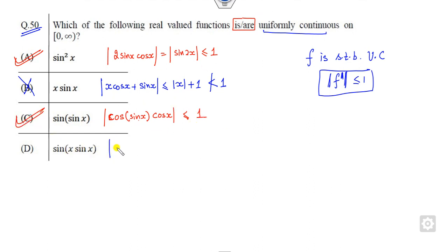Look for the last option. The derivative of this is cos x sin x times (x cos x plus sin x). Now, what is the mod of this? This value must be less than 1, but this value is less than x plus 1, which is not always less than 1. So this option is cancelled out.